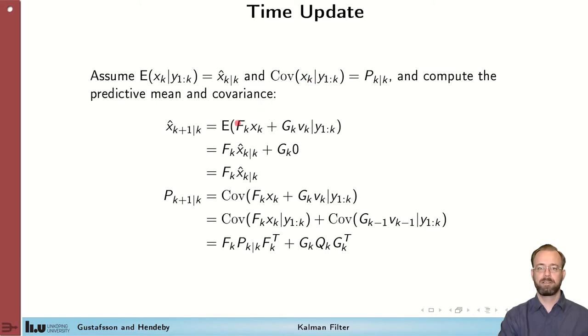We now start by finding out the mean of the updated distribution. It's simply plugging in the motion model and applying the expectation. We know that the expectation of a constant is a constant, so we can push that through and have the expectation of x given the measurements, which is x hat k given k. And we know that the mean of the process noise is zero, so this second term disappears, and we end up with this simple expression here.